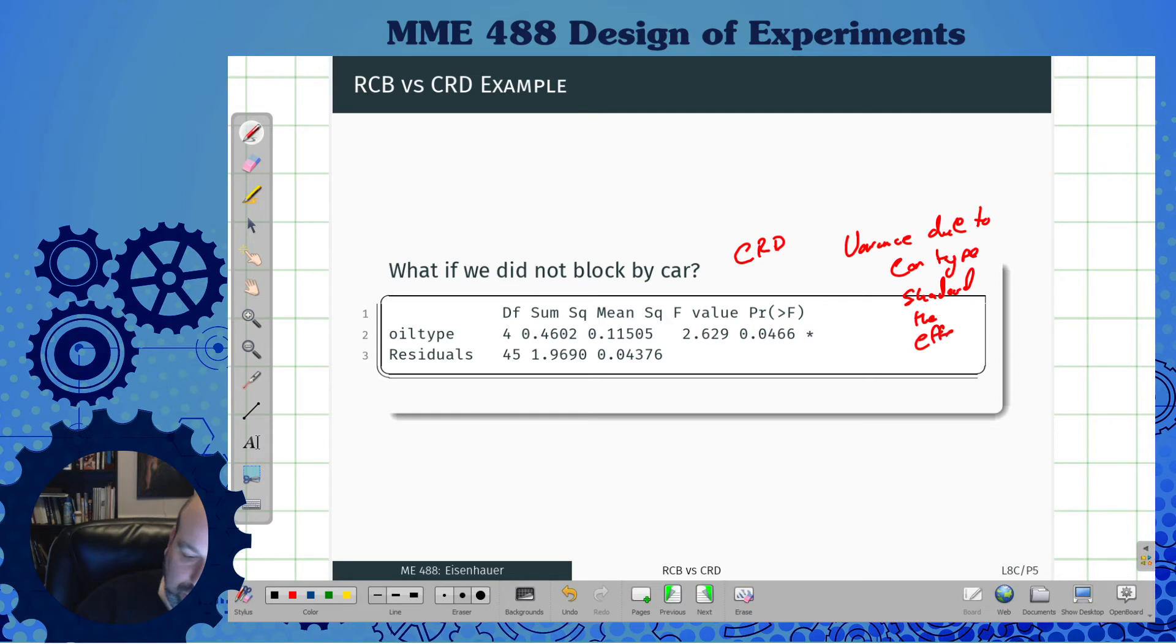If I didn't, notice what happens. All the variance due to car type shadowed the effect or variance due to the oil type. If I had not blocked it, I would get a completely different result. No blocking, I would have made a different conclusion for the same number of experiments.